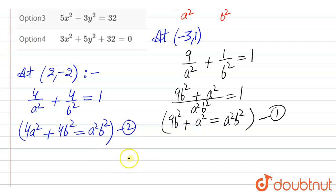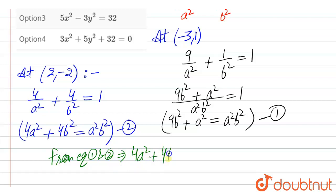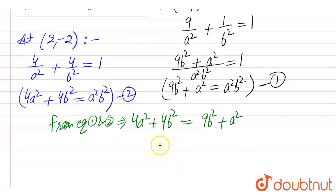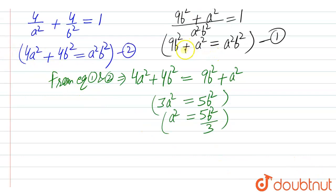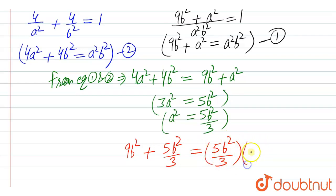Now, from both equations we can compare the value of a²b². From equation 1 and 2, we can say that 4a² + 4b² should be equal to 9b² + a². So, we get 3a² = 5b². Therefore, in place of a², we can write 5b² divided by 3.